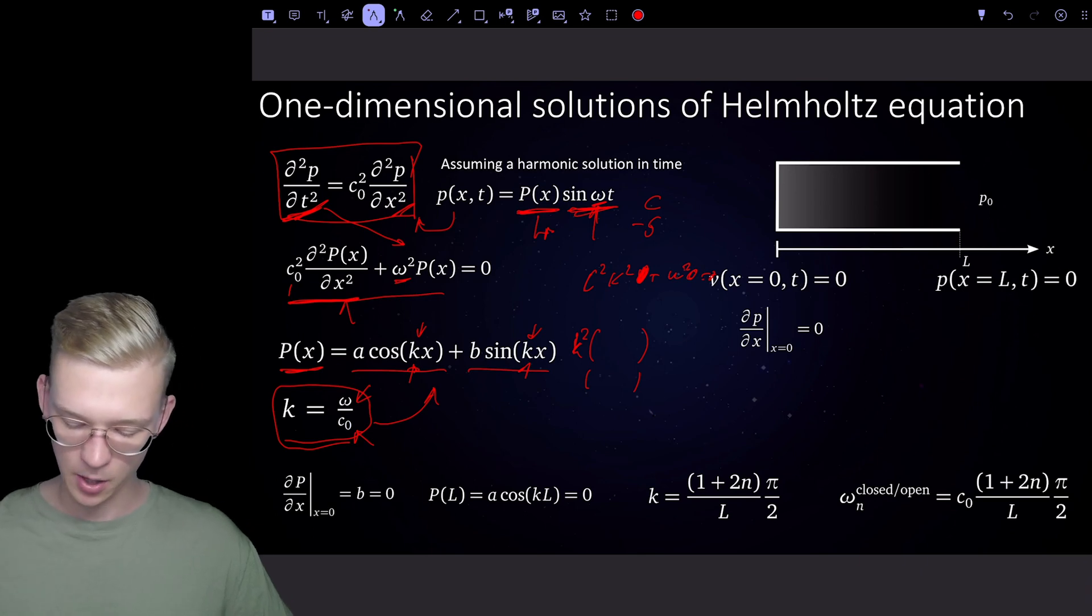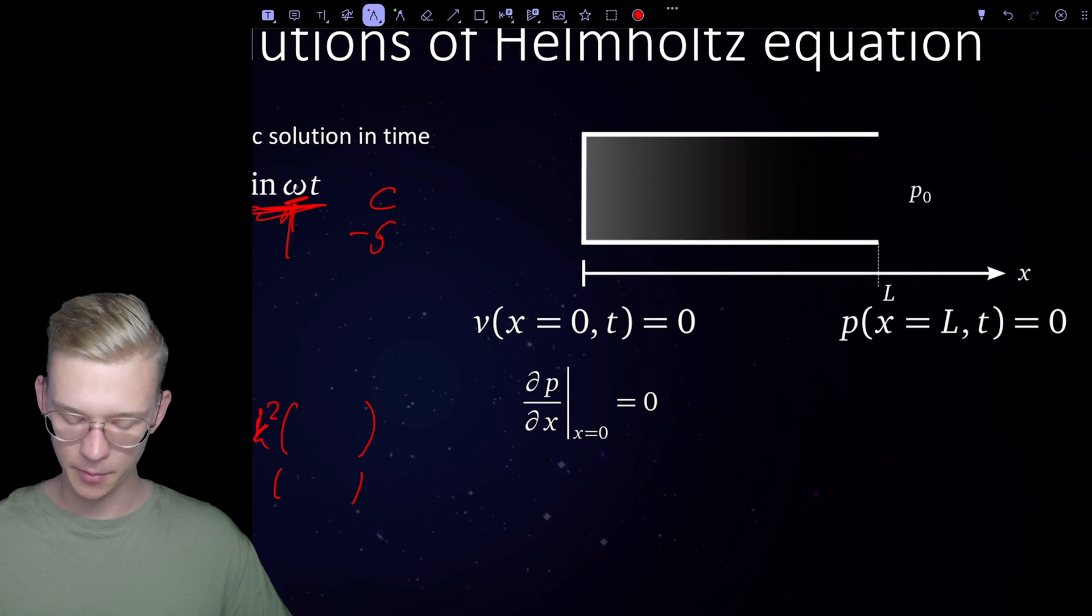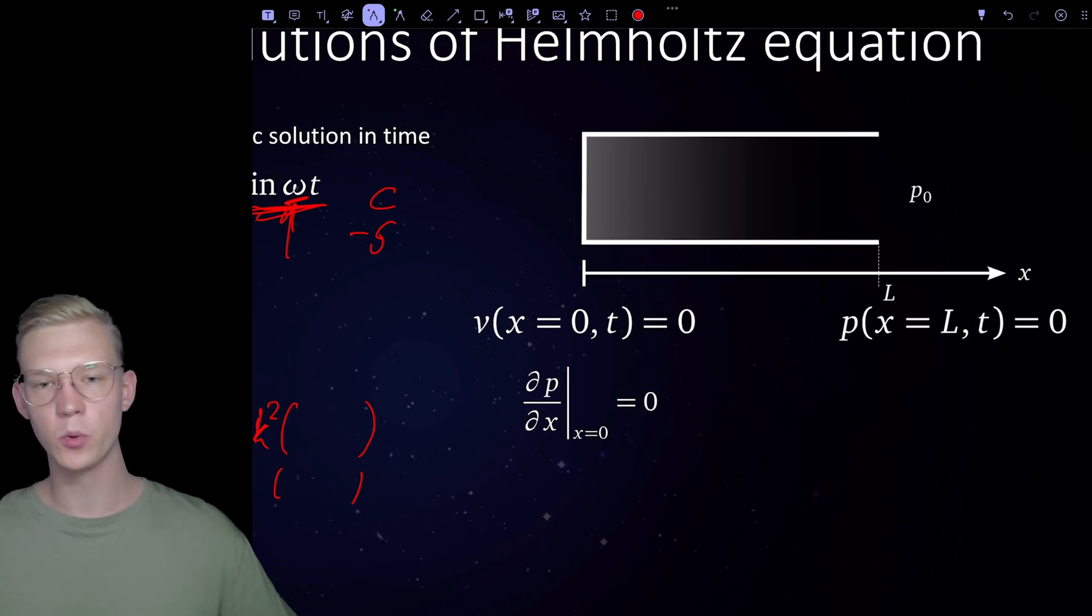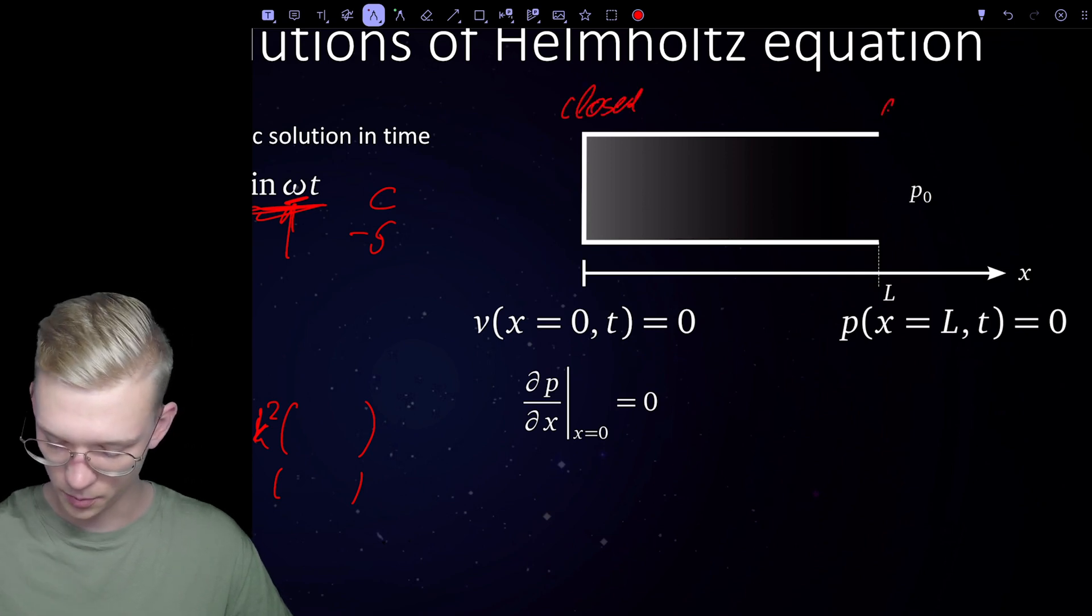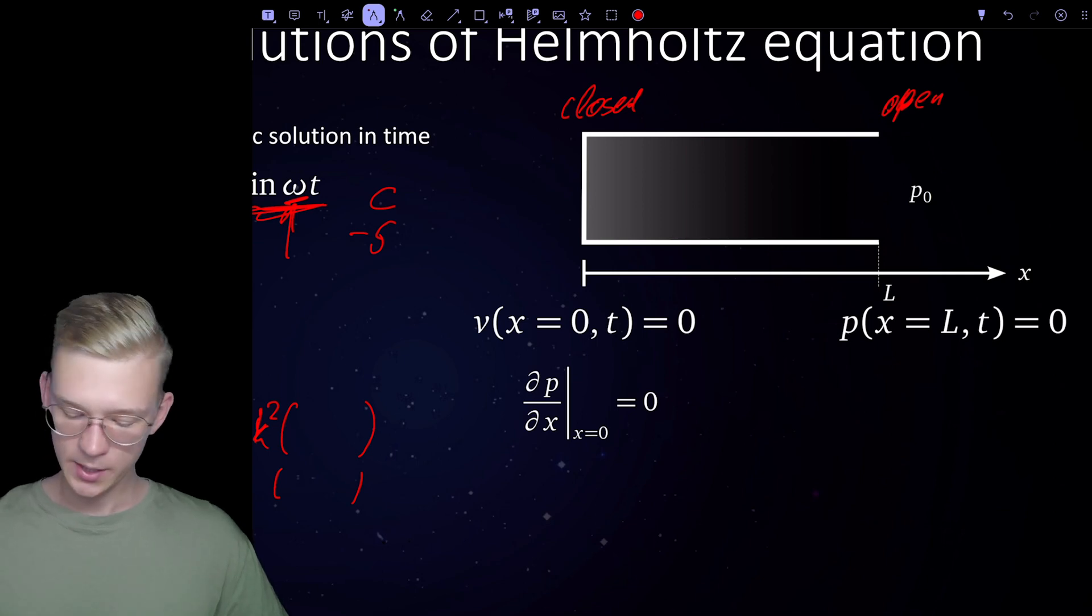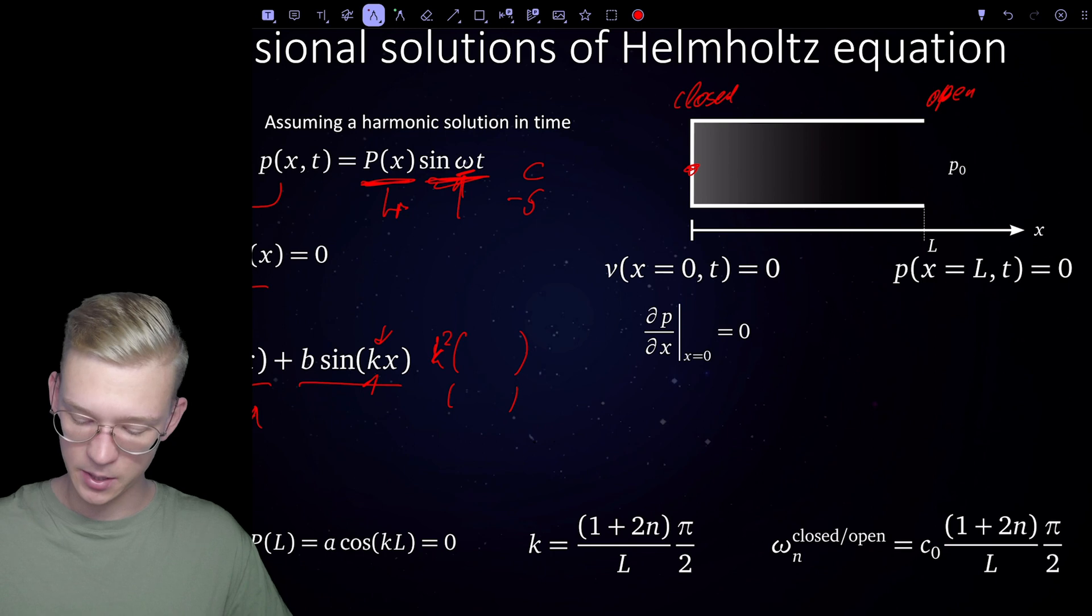Now we can talk about our boundary conditions. So when we talk about a tube, we will say that it is closed-open. We say that at the end or at the beginning of our tube, the velocity is equal to zero.